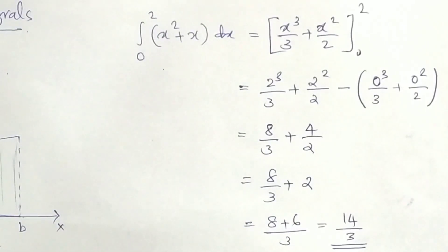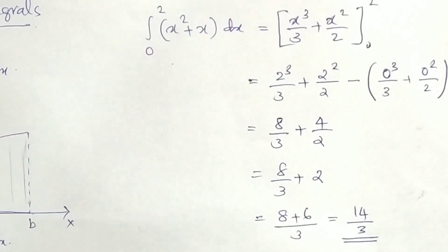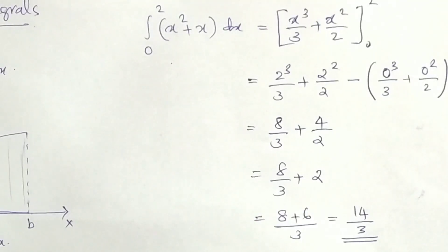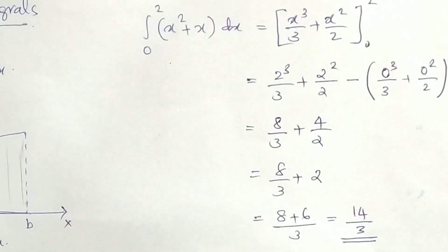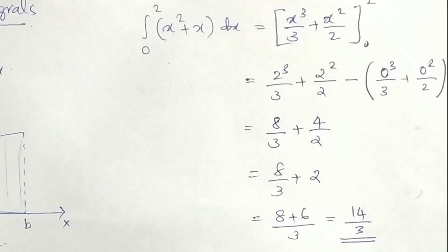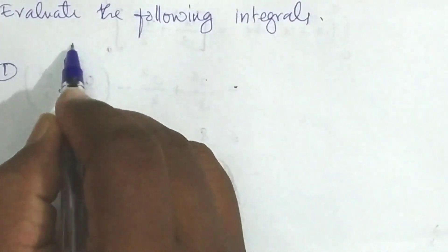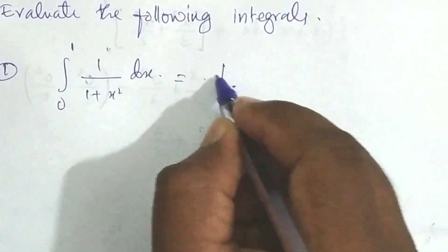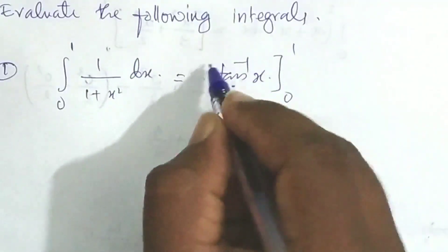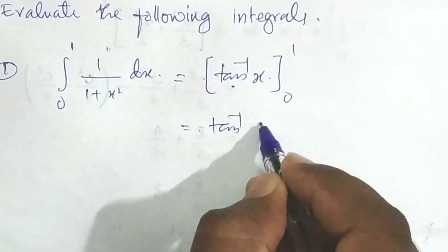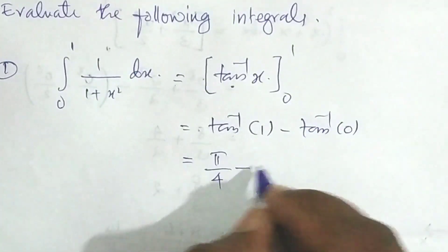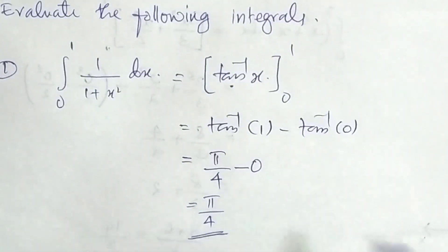This is the definite integral. I will now evaluate more definite integrals. This is the basic idea of definite integration. We will evaluate the integral from 0 to 1 of 1/(1 + x²) dx. This equals [tan⁻¹(x)] from 0 to 1, which is tan⁻¹(1) minus tan⁻¹(0) = π/4 minus 0 = π/4.